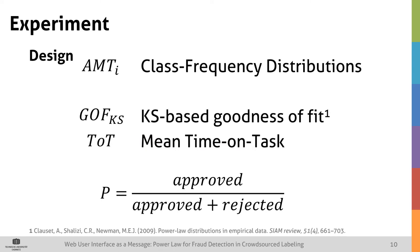The variables in our experiment are the class frequency distributions of the individual workers, then the Kolmogorov-Smirnov statistic based goodness of fit to a power law, and as a baseline, the mean time on task metric. We performed manual verification of the results with the precision value being the ratio between approved and all submissions by one crowd worker.